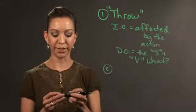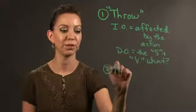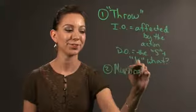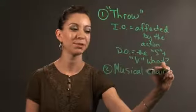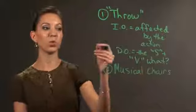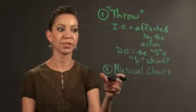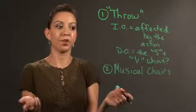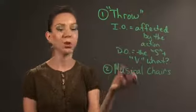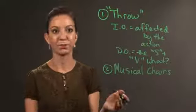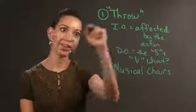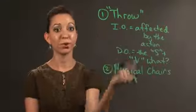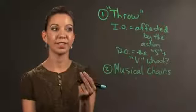Second game you can do is an oldie but goodie called Musical Chairs. It's just a musical chairs game, but what you do is once the last person is left standing, if they don't have a chair to sit in, you ask them questions about direct objects and indirect objects. Usually you can have them go to the board and write a sentence that has both a direct object and an indirect object in it.